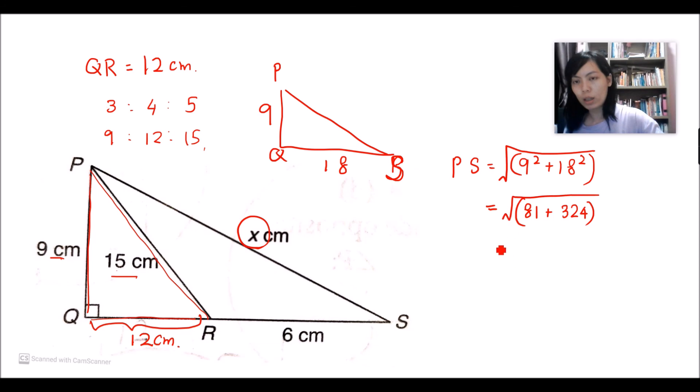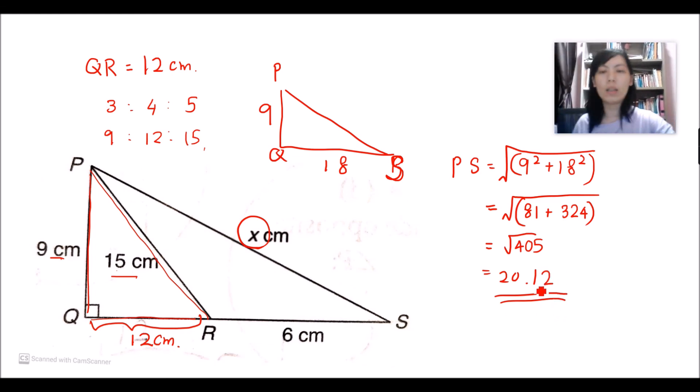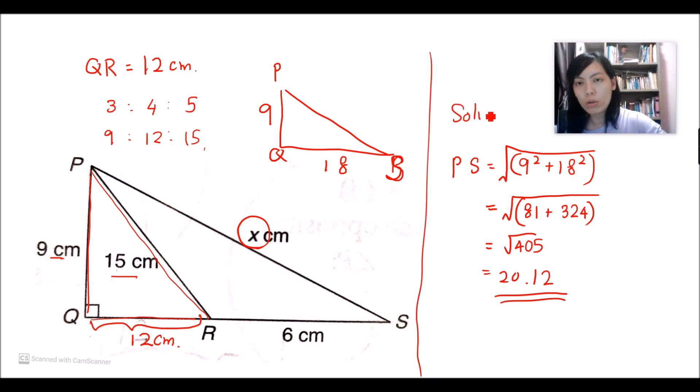Since it is in brackets, we are going to solve the operation in the bracket first. It is 81 plus 324. You will get the square root of 405, which is equivalent to 20.12. This is the final answer. Normally in maths, if this is the final answer, we will double underline it. So this is the solution.